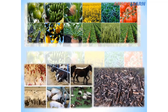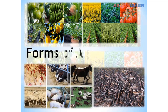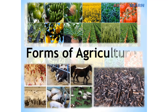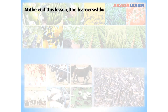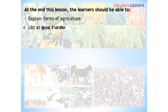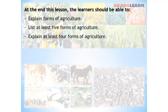Good day, wonderful learners. Today we shall be discussing about forms of agriculture. At the end of this lesson, learners should be able to explain forms of agriculture, list at least five forms of agriculture, and explain at least four forms of agriculture.